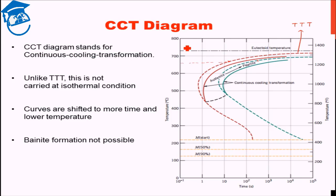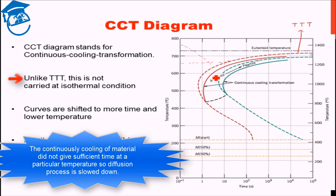But now imagine that you are continuously cooling the material. Thereby what is happening is that you are not giving it sufficient time at a particular temperature. Thereby diffusional processes will itself slow down relative to if it were maintained at a particular temperature.